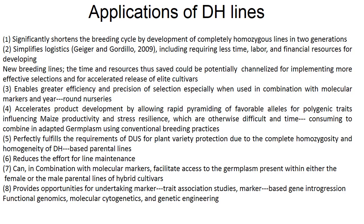Coming to applications of double haploid lines. It significantly shortens the breeding cycle by developing completely homozygous lines in 2 generations. It simplifies logistics requiring less time, labor and financial resources for development of new breeding lines. Time and resources saved could be channelized for implementing more effective selection and accelerated release of elite cultivars. It enables greater efficiency and precision of selection, especially when used in combination with molecular markers and year-around nurseries. It accelerates product development by allowing rapid pyramiding of favorable alleles for polygenic traits influencing maize productivity and stress resilience.